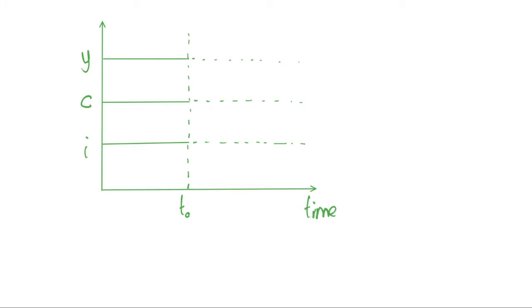Let's assume we've reached a random steady state — we'll call that k* — and we're at a k* which is greater than the golden rule steady state. So we're in steady state but we want to ideally be at the golden rule steady state, which maximizes consumption and thus maximizes economic well-being, because we get utility from consumption. But clearly we have too much capital per capita in our current k*, so we want to decrease this to move to k* gold.